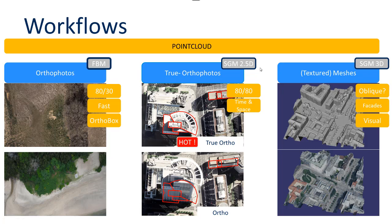Match3DX also offers a textured mesh, which is currently more suited for visualization. It provides non-photogrammetric and non-surveyor users with a very detailed and clear view of a scene. It includes the real texture of objects, making interpretation very easy, and also allows inspection of regions, areas, or project planning.